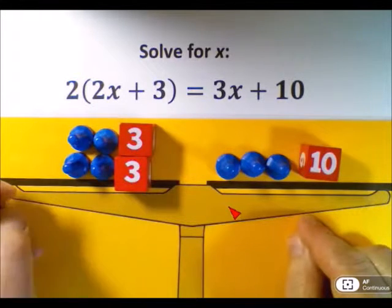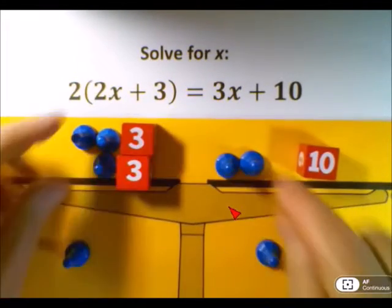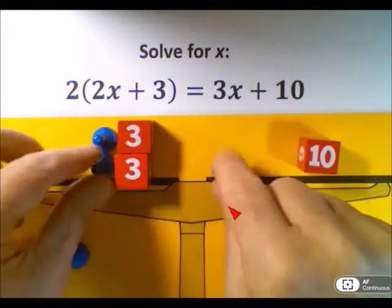At this point, we are ready to simplify by doing legal moves. We can take away 1x from each side. We could do that a second time. We could do that three times.